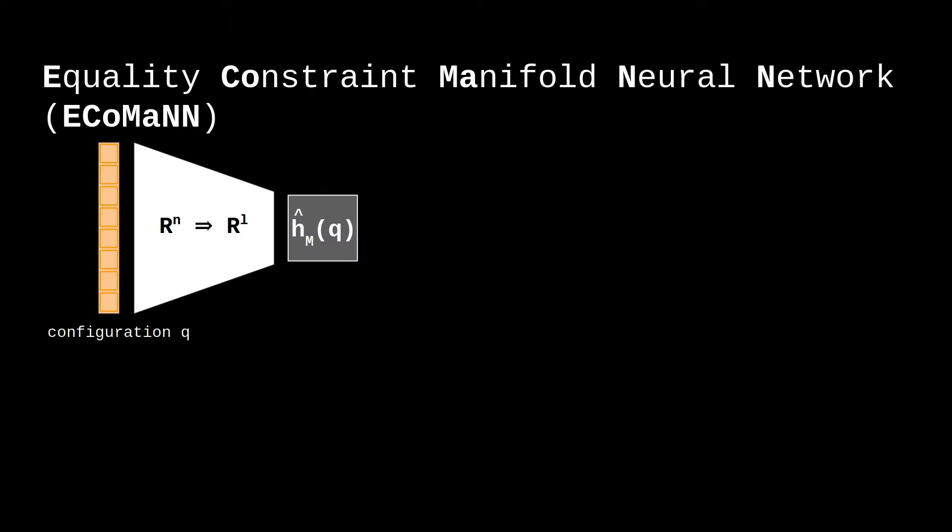ECOMAN is a novel neural network structure which takes a configuration Q as input and outputs the prediction of the implicit function HM. For equality constraints, HM is zero for all configurations on the manifold.